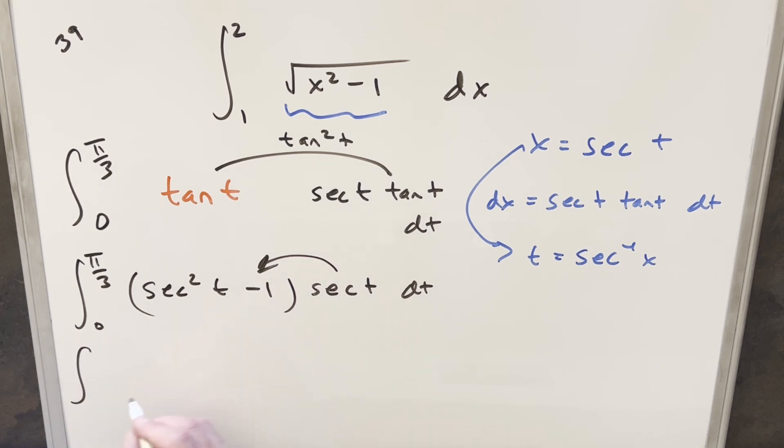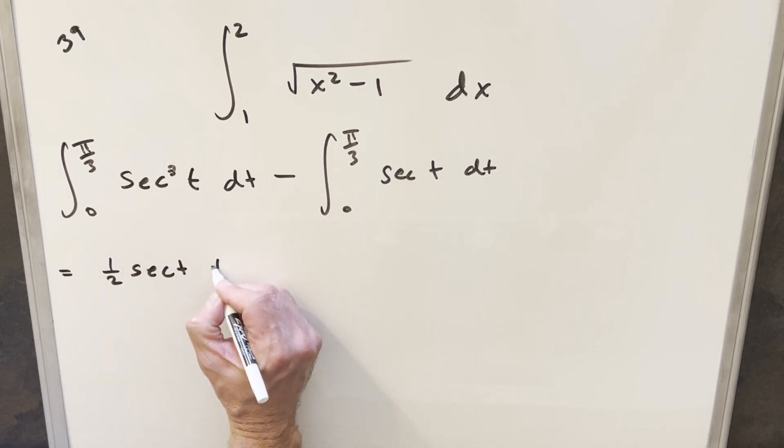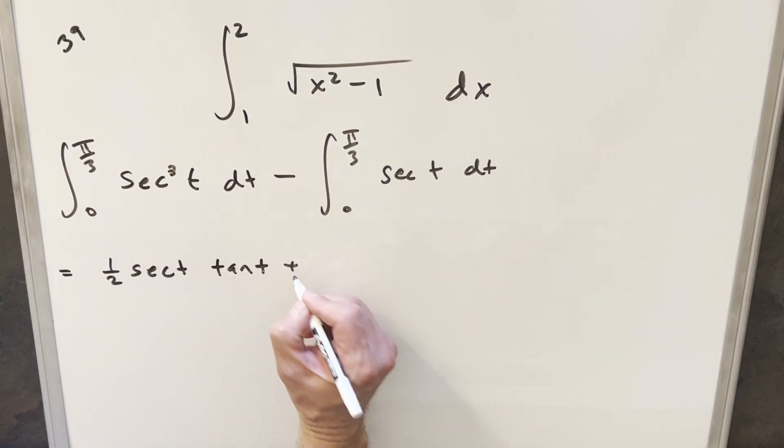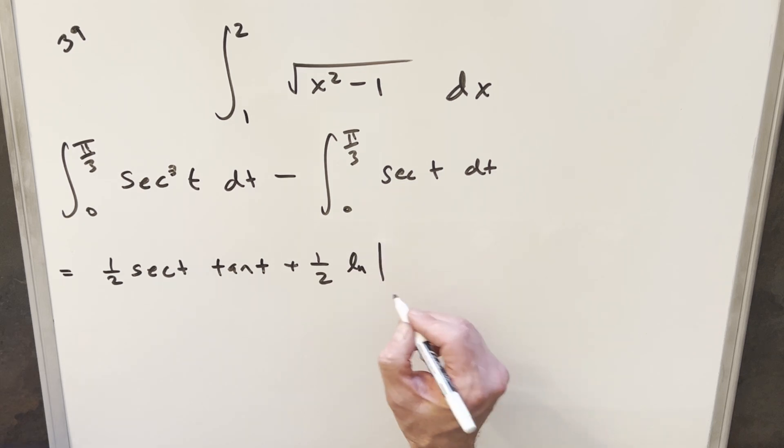And then for the second one, we're just going to be integrating secant of t. But now for each of these, I'll just use the formula. For this first one, you could do it with integration by parts. And you end up getting this integral from it. But let's just do it with the formula this time. So what's going to happen is this first piece is going to be 1 half secant t tan t. And then the second half, you just remember it as half of basically this integral, which is going to be natural log of secant t plus tan t.